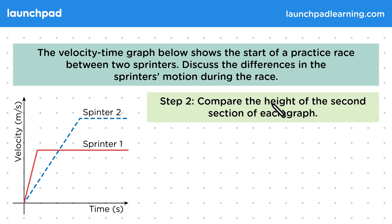For step two, compare the height of the second section of each graph. So here we can see that the graph for sprinter two is higher than the graph for sprinter one. Again, we should talk about what this represents rather than just what we see in the graph. Remember that the y values of a velocity-time graph represent an object's velocity. Assuming the two sprinters are running in the same direction, then we can deduce that sprinter two had the faster top speed.